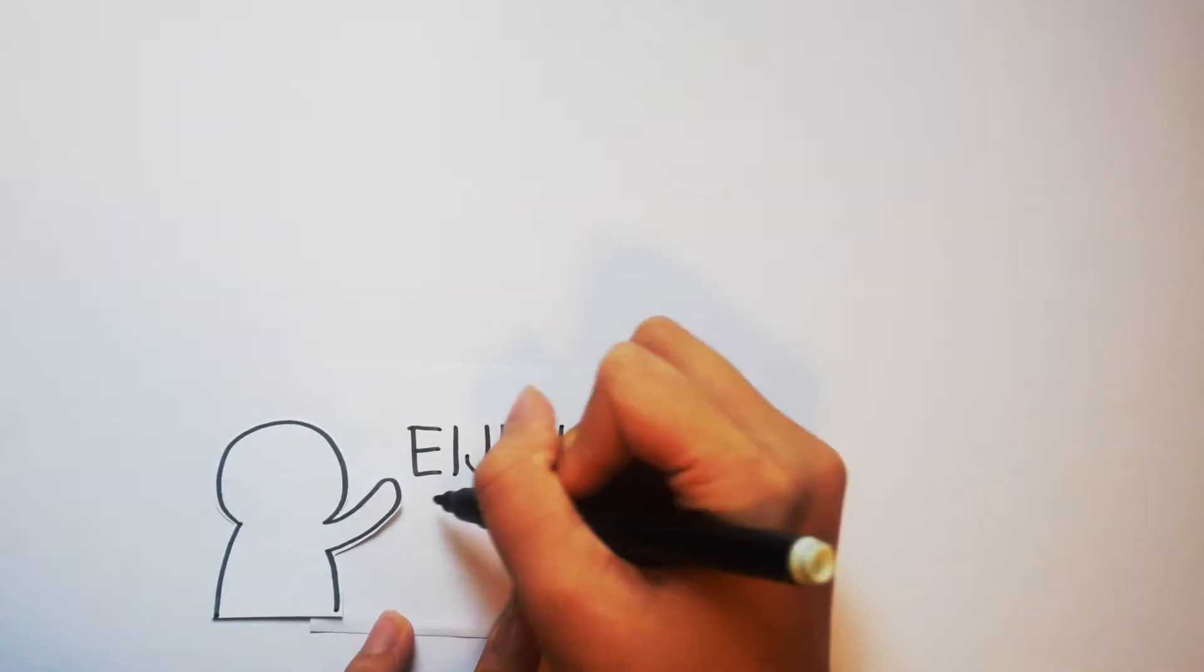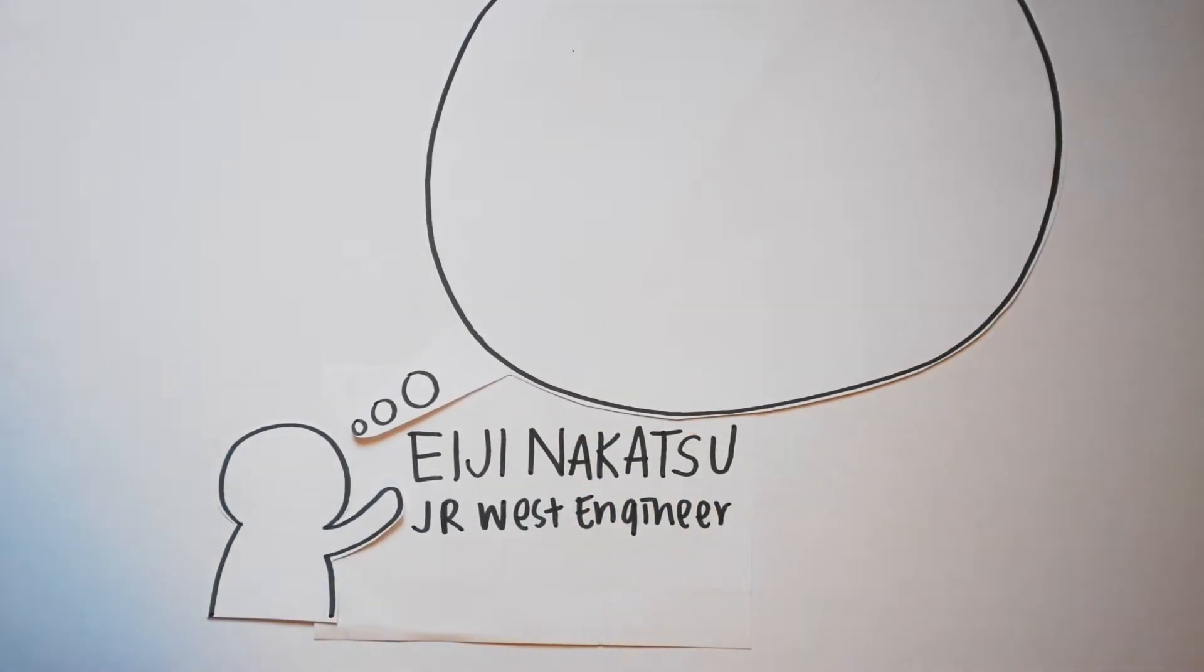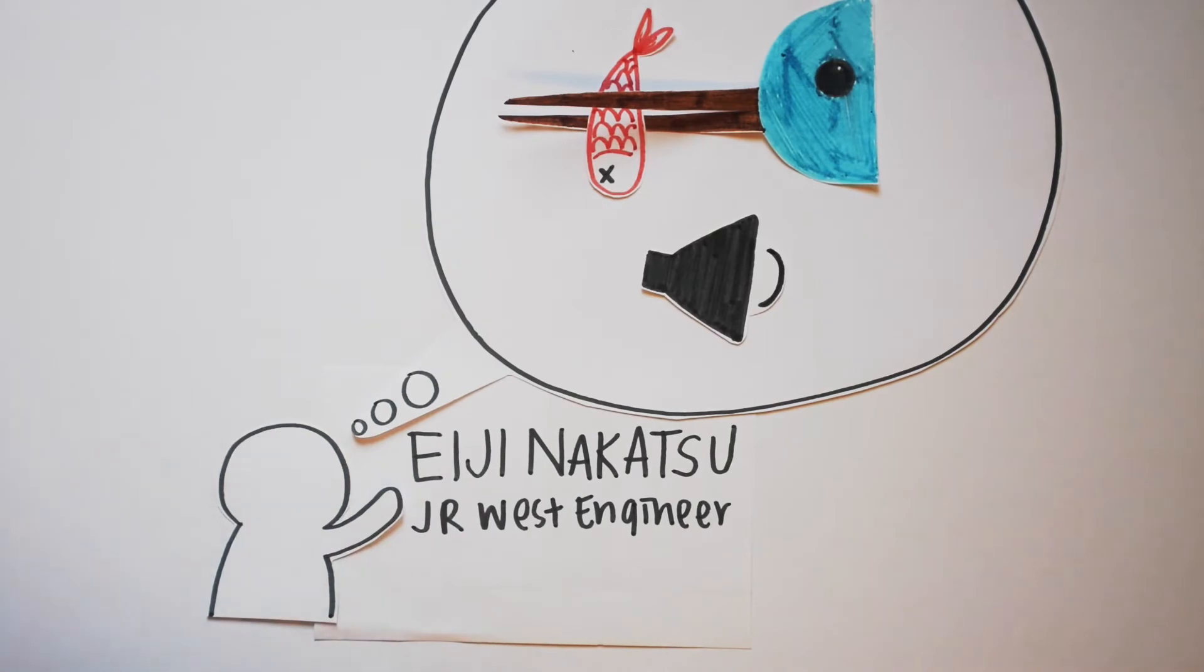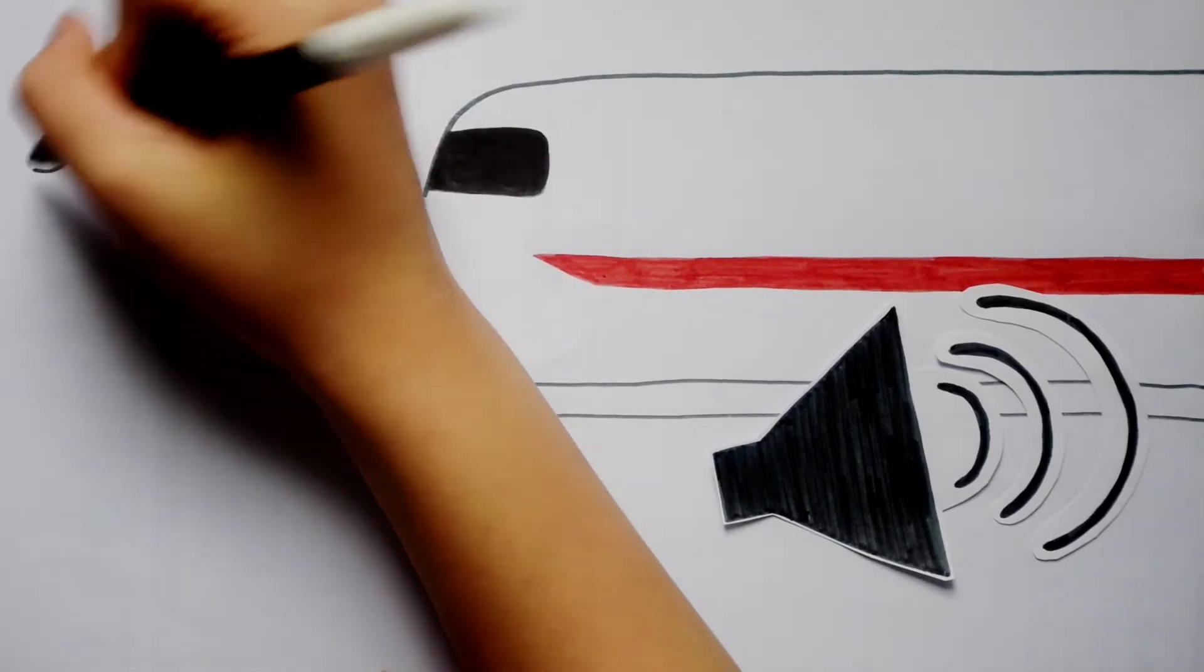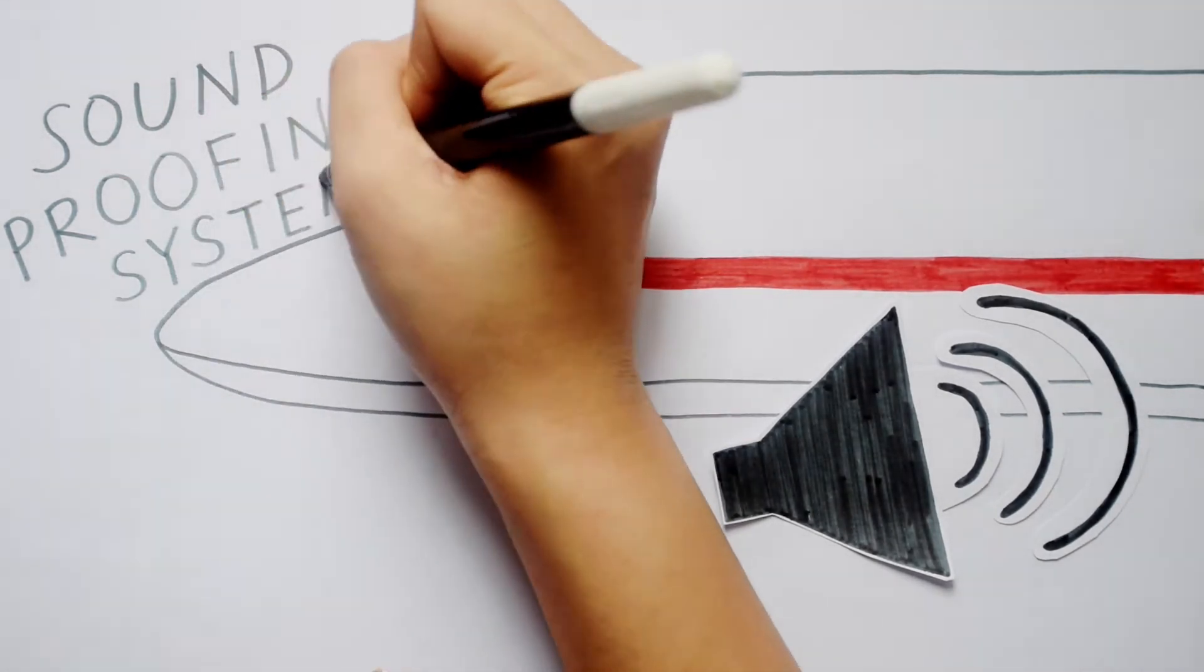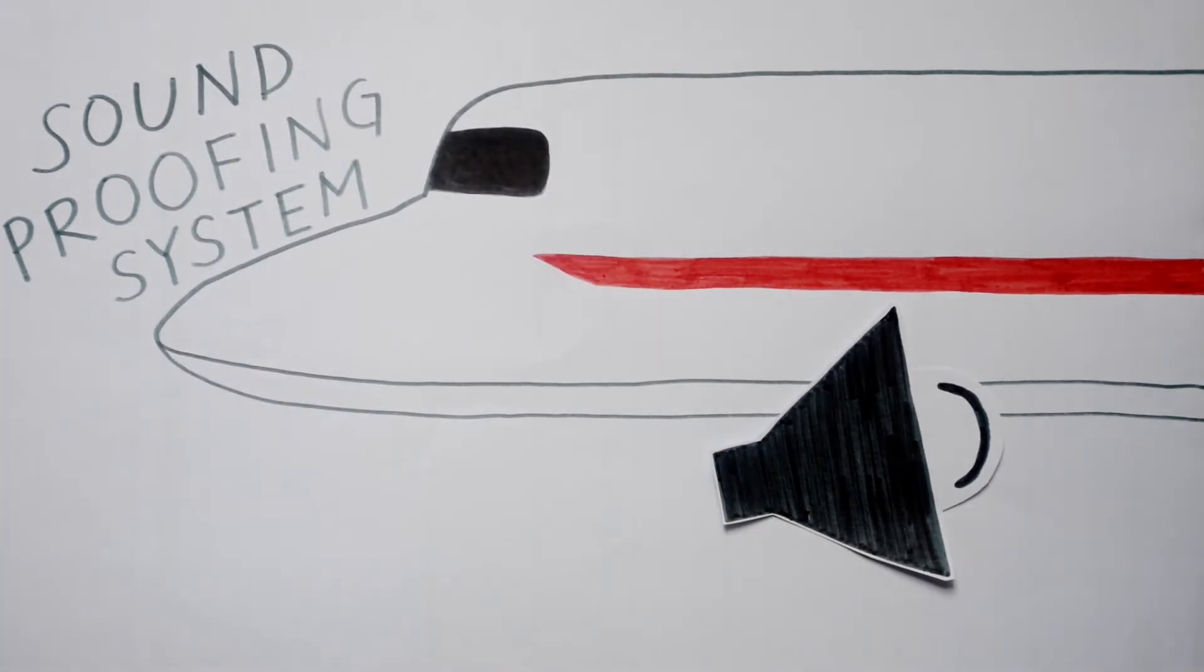J.R. West engineer Aiju Nakatsu was inspired by the kingfisher, a bird that dives into water with barely a splash to hunt for food. He then redesigned the bullet train with a nose in the shape of the kingfisher's beak. This decreased air resistance and lowered the noise level of the train.